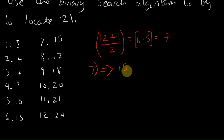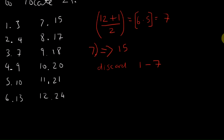So at 15, we're looking for 21, and 15 is less than 21, which means that we can effectively discard from 1 to 7. We're including getting rid of 15 as well, and that means we're going to be left with 8 to 12.